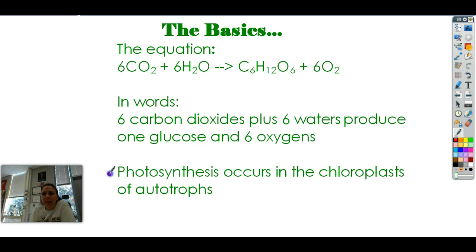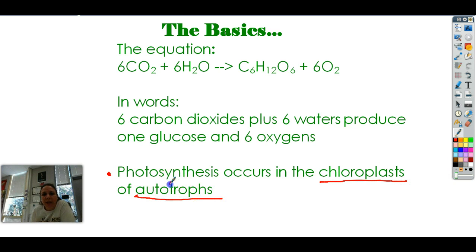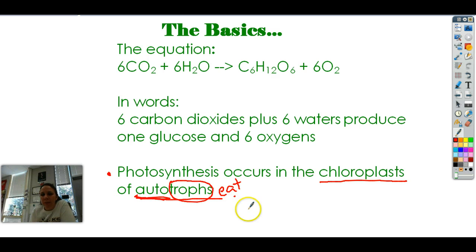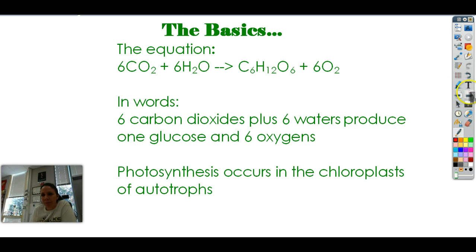And you need to know where it happens. The whole reason why plants are green is because photosynthesis occurs in the chloroplasts of something called an autotroph. Anytime you see the word 'troph,' that means eat. 'Auto,' like autobiography or automobile, means yourself. It doesn't mean you eat yourself — it means the things you eat, you make yourself. We do not make our own food. We don't produce it by sitting out in the sun, so we are not autotrophs. We are called heterotrophs.